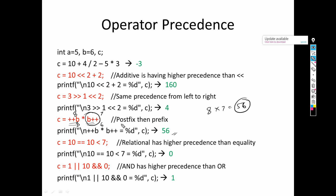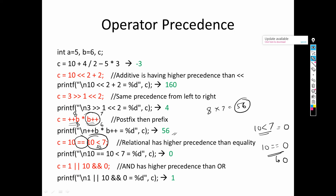In an expression with a comparison equality operator and a relational operator, the relational operator has higher precedence than the equality operator, as seen in the table. So the relational operation is executed first. For 10 < 7: 10 is not less than 7, so this condition is false and returns 0. Then comparing 10 == 0 also returns false, giving 0. Since the relational operator has higher priority, this operation is performed first.